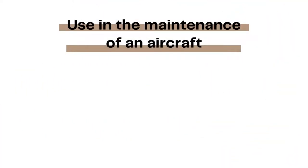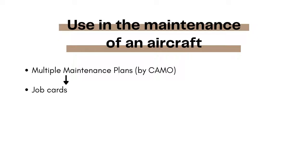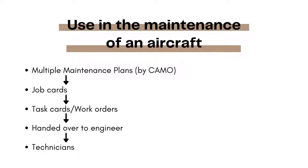When you create a technical publication, you can specify whether an upgrade is applied to the aircraft. Multiple maintenance plans, each with an associated job card, can be created for a technical publication. Each maintenance plan is used to create a task card for each affected aircraft. The task cards are used to create work orders to implement the requirements of the technical publication.